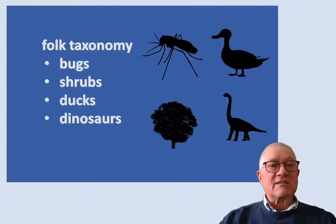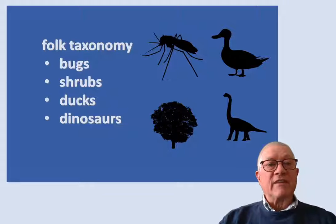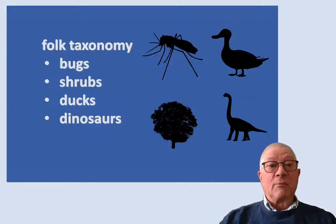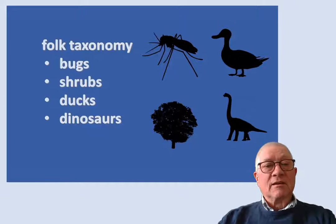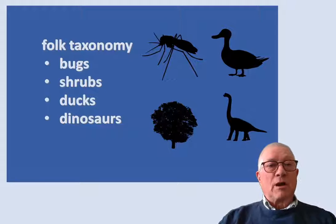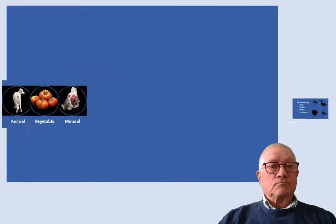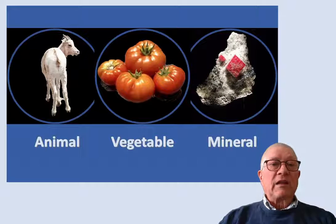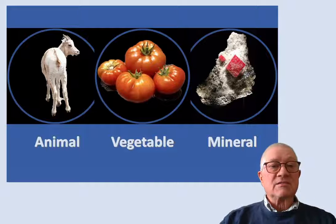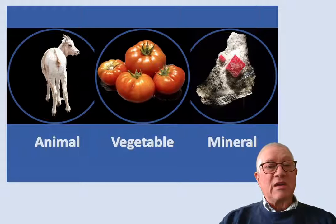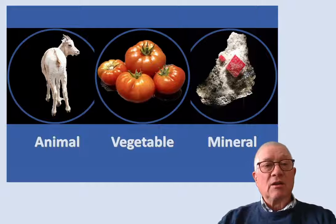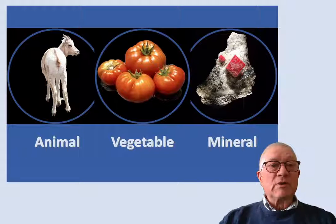Humans like to classify things — we don't even think about it. It can be called folk taxonomy, and we have no difficulties grouping things like bugs, shrubs, ducks, and dinosaurs. A classification scheme that went back at least to the time of the Greeks consisted of three main groups: animal, vegetable, and mineral.